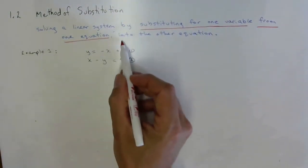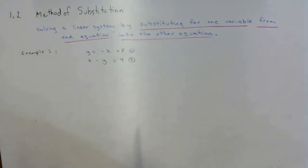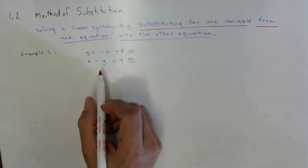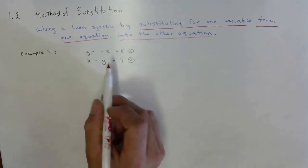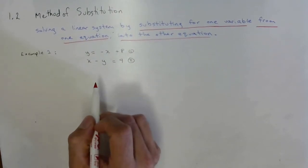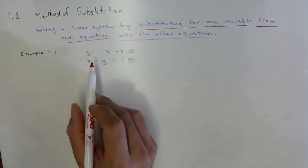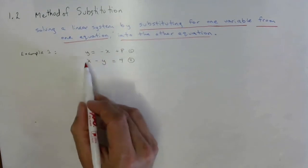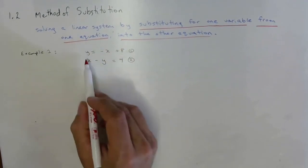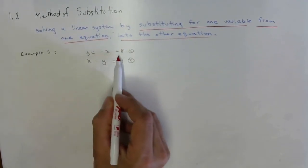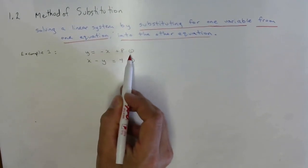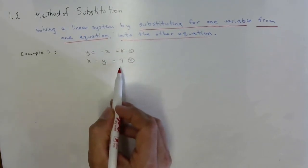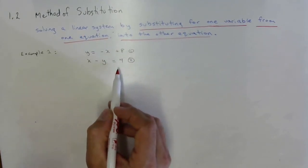Example 1: we're given the line y equals negative x plus 8, we'll call that equation 1, and we're given the line x minus y equals 4, that's equation 2. The nice thing about this method is it doesn't matter that equation 1 is in y equals mx plus b form and equation 2 isn't.